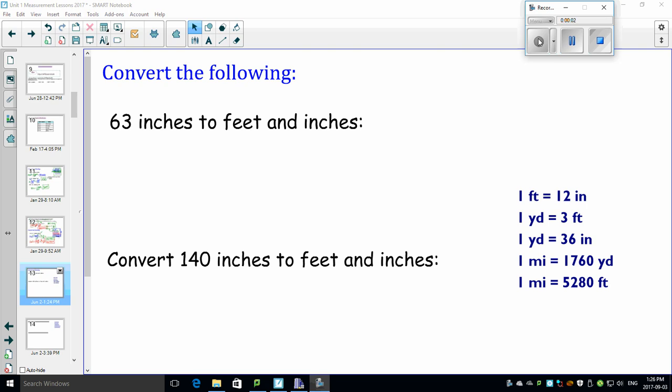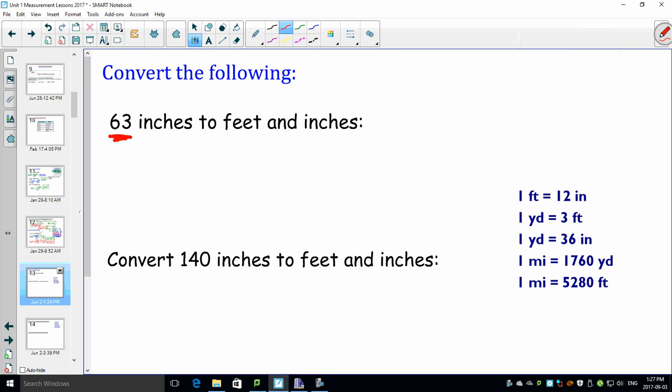So if you notice, so far all the conversions have been really nice, no decimal places, no nothing. Well, that's all going to change. We're going to make some things a little bit more complicated because what I want to show you here is what happens if you get a number that doesn't divide nicely into any of our conversion factors. Oh boy, we're in trouble now, aren't we? Well, not really. There's several different ways of doing this.